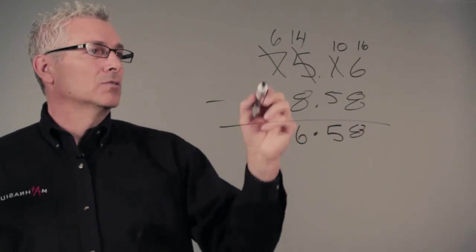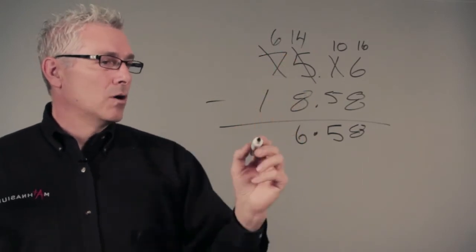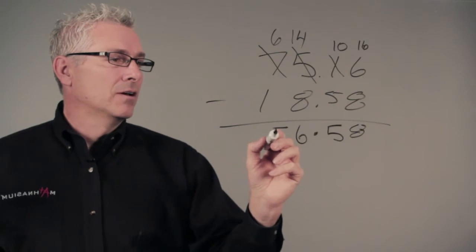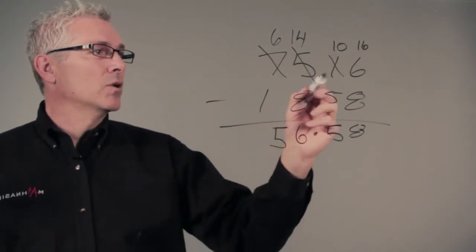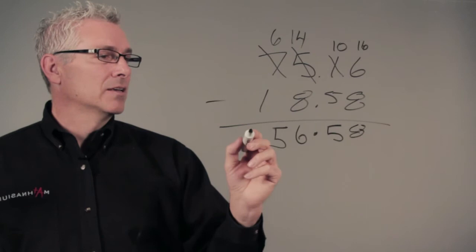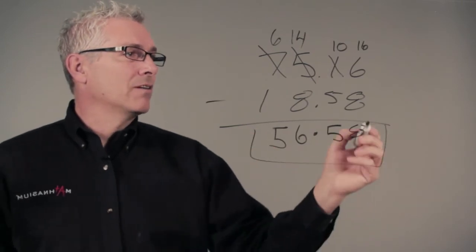And finally, we're going to subtract one from six. We don't need to borrow. One from six is five. And our answer to 75.16 minus 18.58 is 56.58.